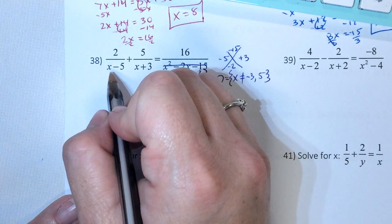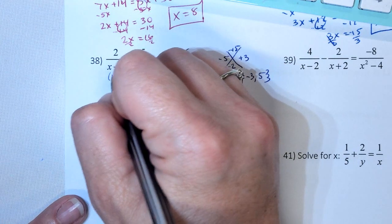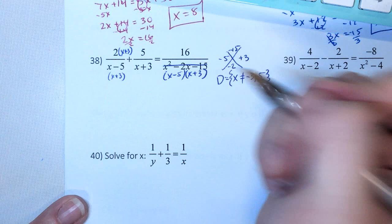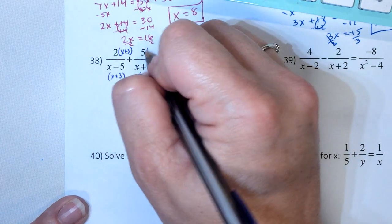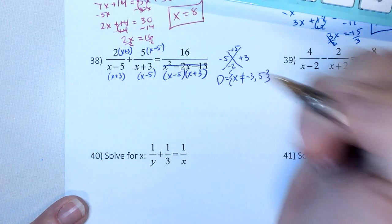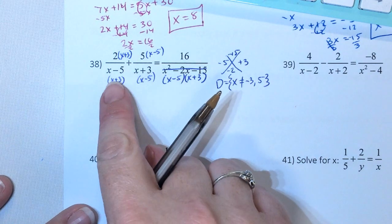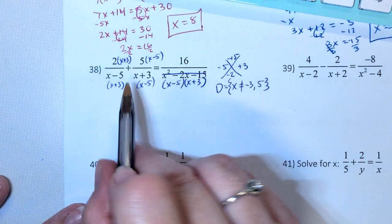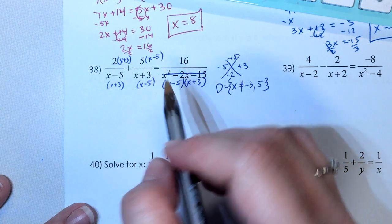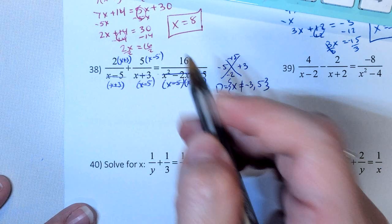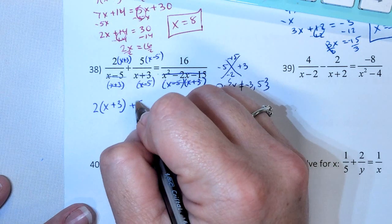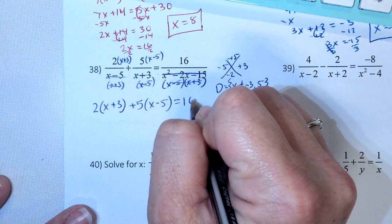Okay, so this has the x minus 5, it needs the x plus 3. What I give to the bottom, I have to give to the top. This has the x plus 3, it needs the x minus 5. And now, all three denominators have both terms. So because of that, this is an equation, and when all the denominators match, I can cancel them. And I get 2 times x plus 3, plus 5 times x minus 5, equals 16.